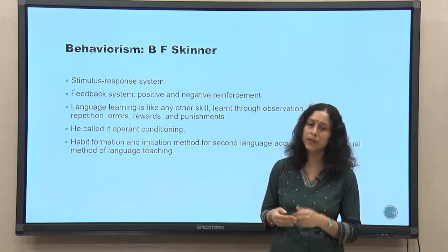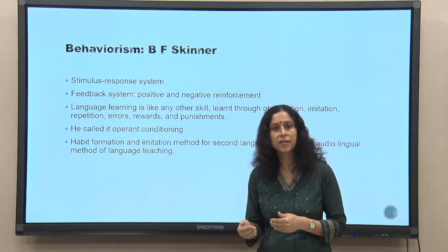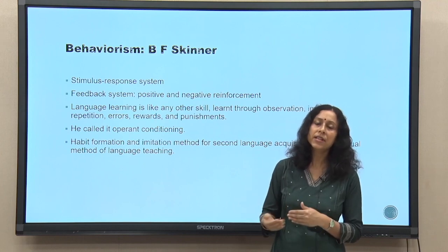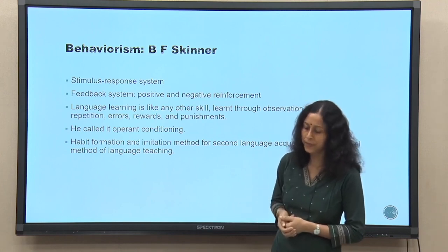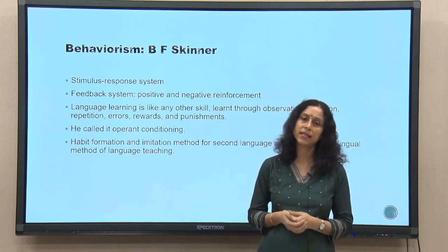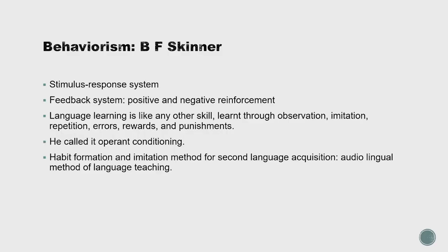If there is a wrong response to the stimulus, there is negative reinforcement — the teacher will correct the child, and gradually the child will learn not to utter that. Basically this is an imitation process that the child goes through. Language learning is like any other skill learned through observation, imitation, repetition, errors, rewards, and punishments. This is the entire frame within which language learning takes place according to behaviorist theories.